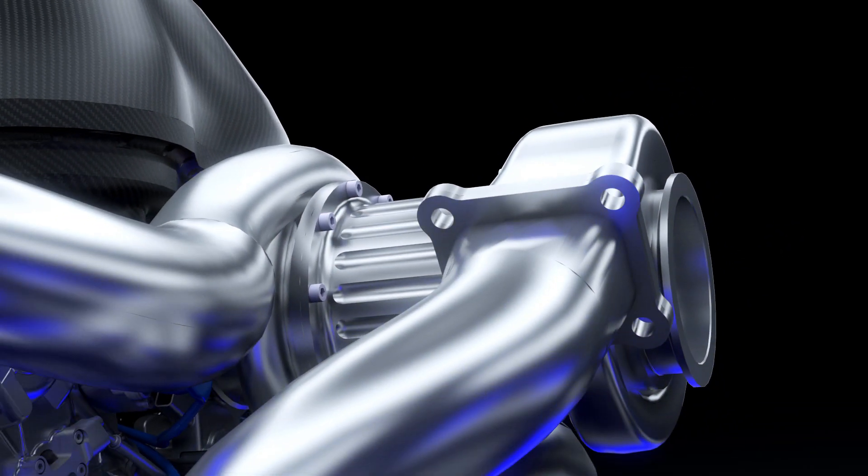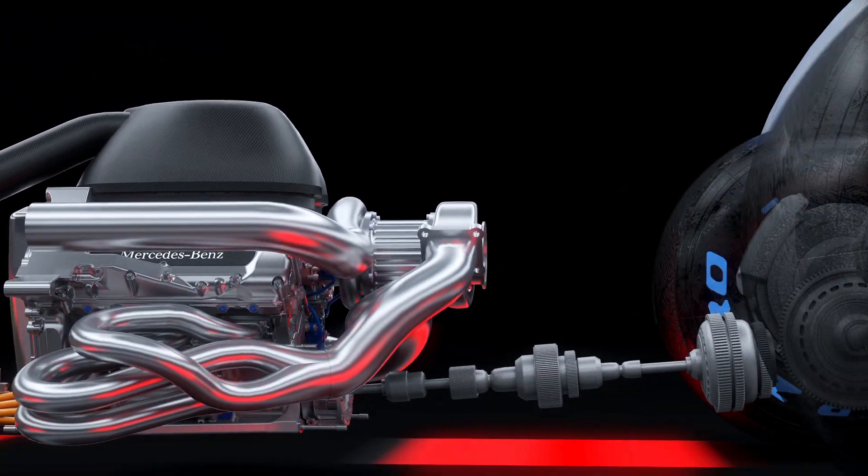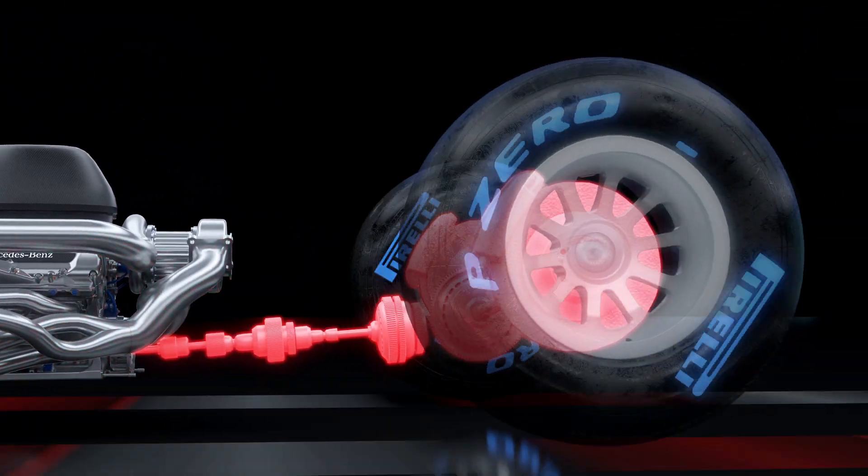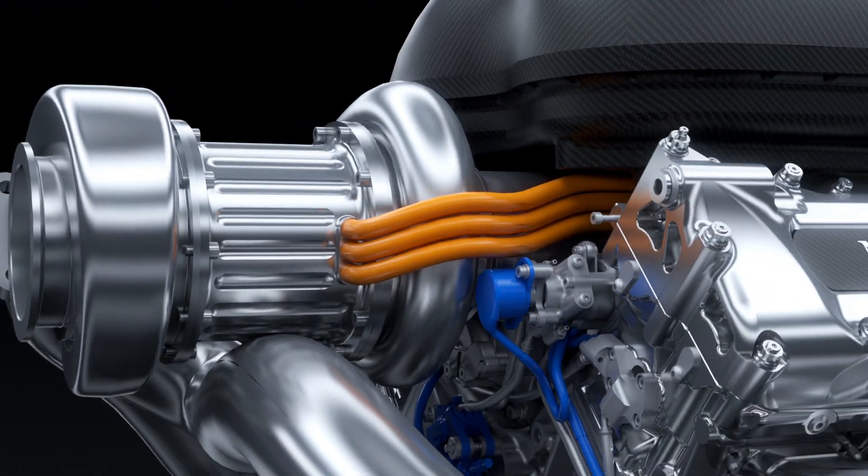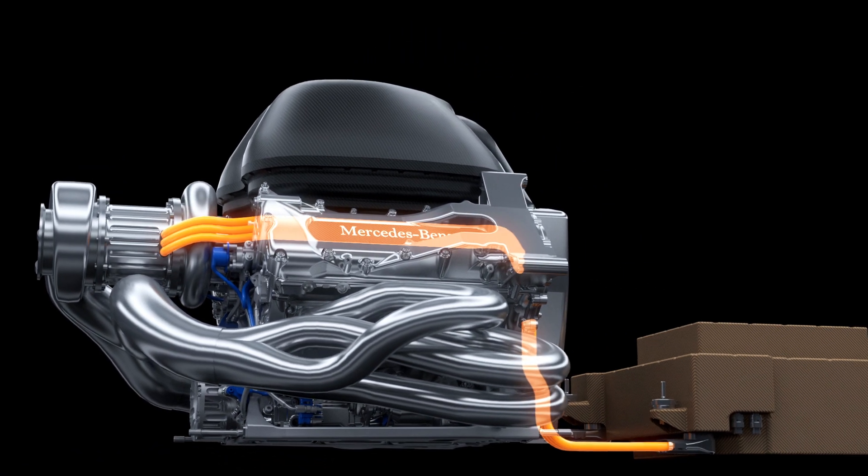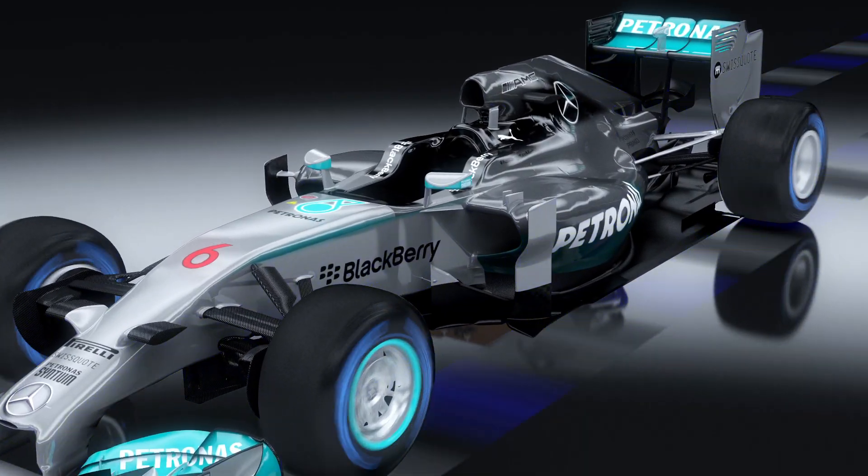The electric motors on their own develop more power than a family saloon car. It's the most advanced hybrid system yet seen in a race car. This new technology is used to achieve maximum efficiency because Formula One is now a fuel-based racing formula.